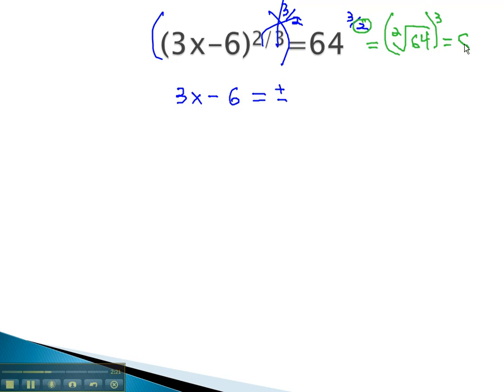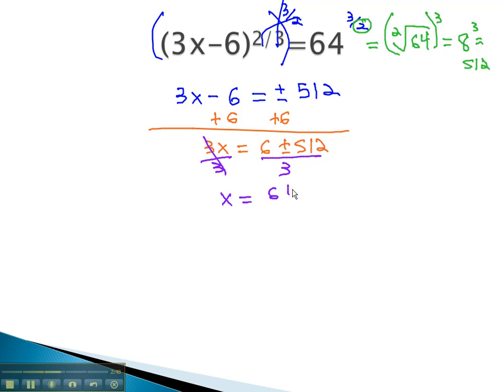The square root of 64 is 8, and 8 cubed is 512. The 3 halves power of 64 is going to be either plus or minus 512. We can finish solving by adding 6, 3x equals 6 plus or minus 512, and dividing by 3.